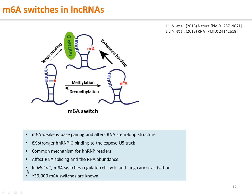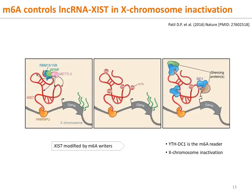m6A switches are not isolated cases — they are now widely found in about 39,000 RNAs. In another example of m6A function in non-coding RNAs, lncRNA XIST is modified with m6A by the m6A writer complex RBM15, WTAP, and METTL3. The m6A is read by YTHDC1, which recruits silencing proteins to the proximity of XIST to silence the entire X chromosome.